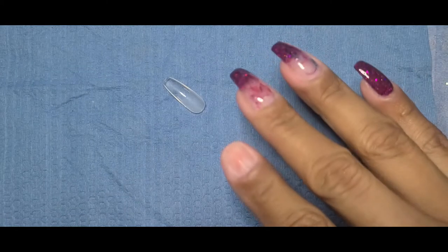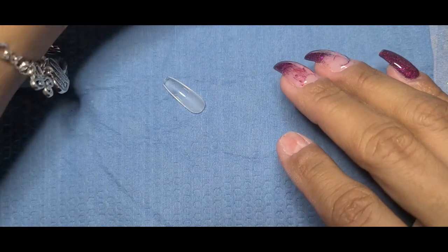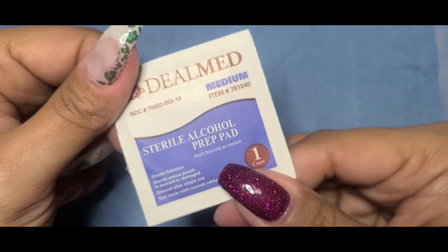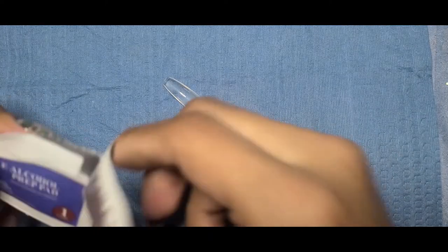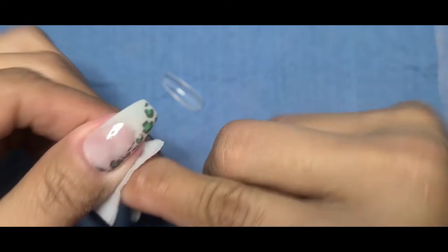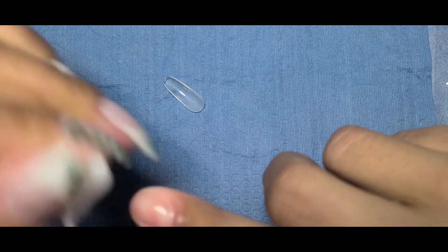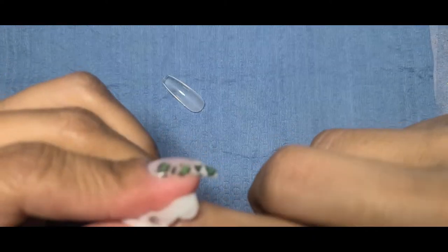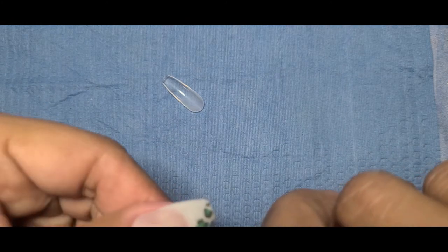So I'm going to clean off my finger really well, and then I'm going to go in with my alcohol prep pad and I'm going to cleanse my nail, remove all the debris, any natural oils that are on the nail, just to help with the adherence of the builder gel and some of the other products that I'm going to be using.